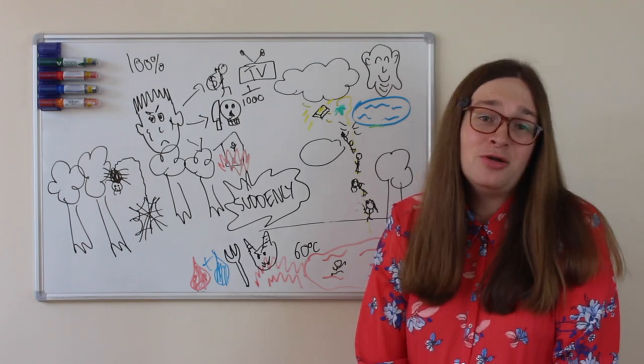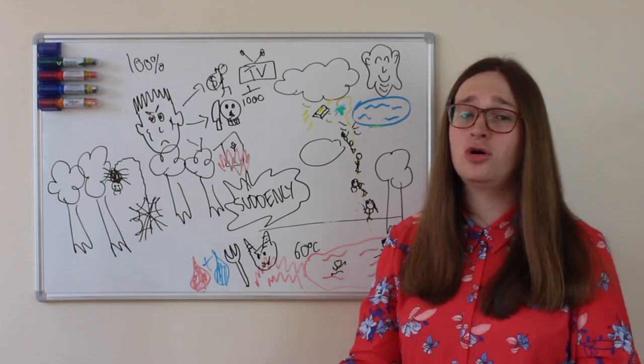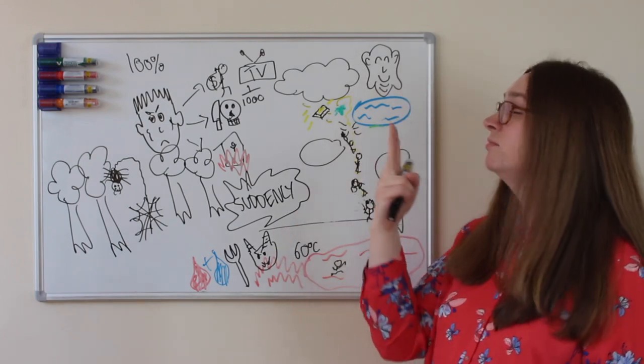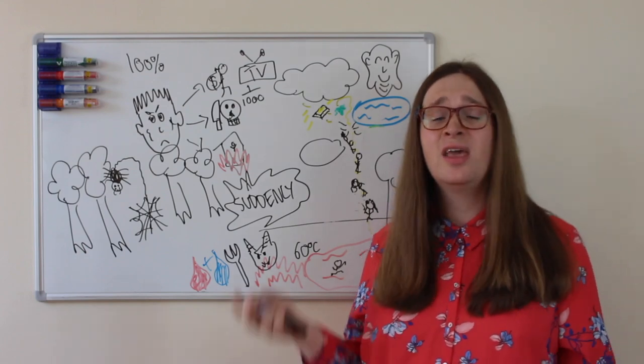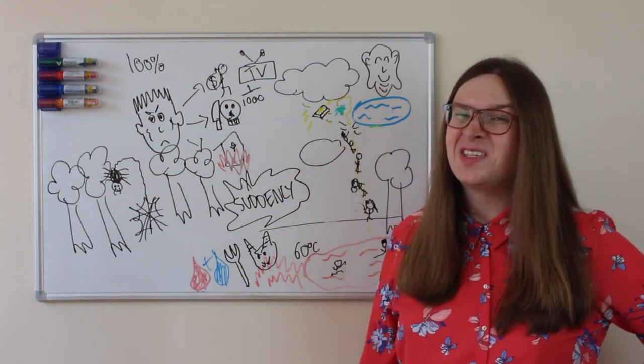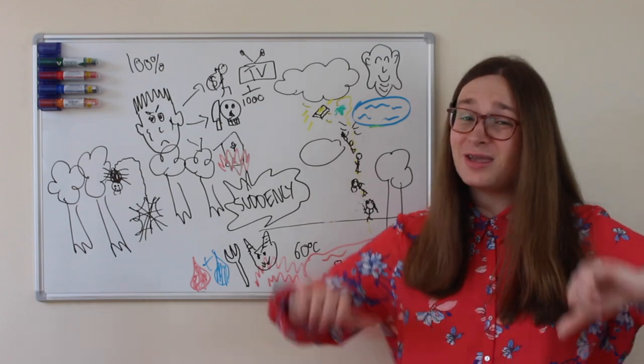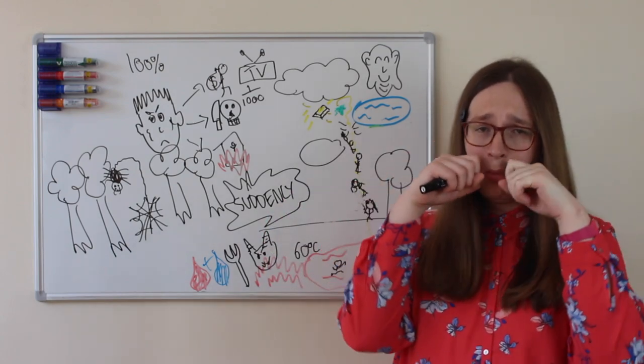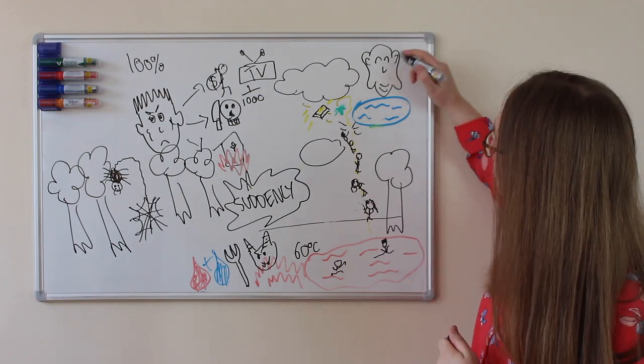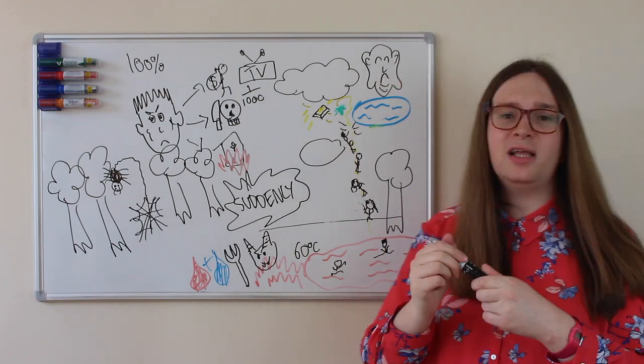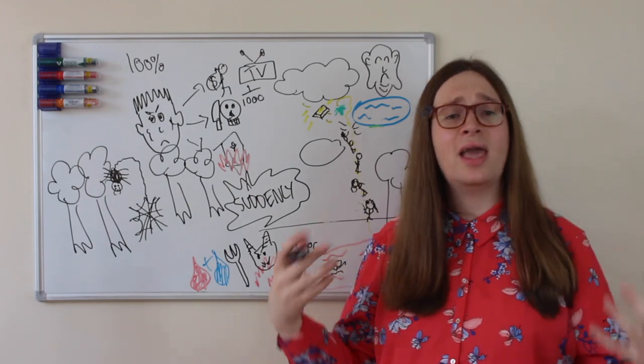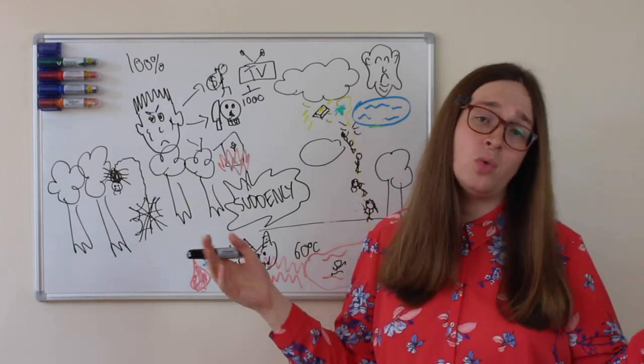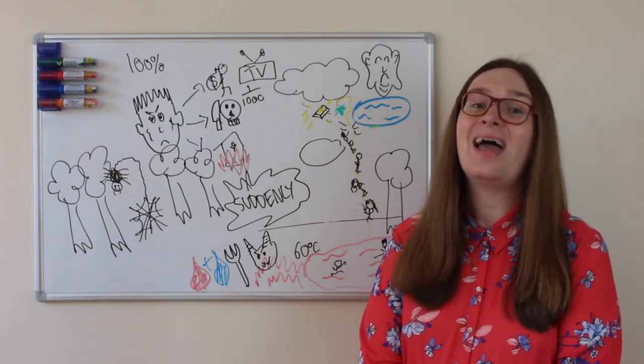So Kandata did not leave hell. And Buddha saw Kandata. He saw that Kandata was actually a very bad man. And Buddha was sad. He was sad. He wanted Kandata to be good, but Kandata was bad. The end.